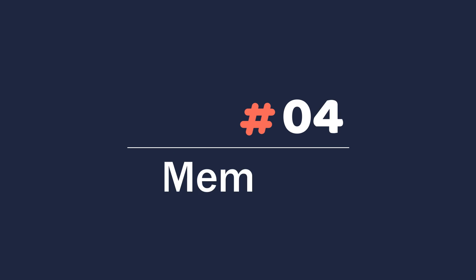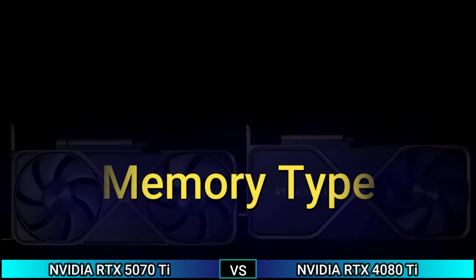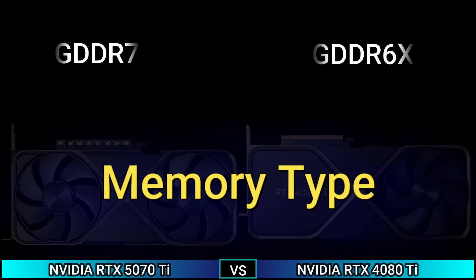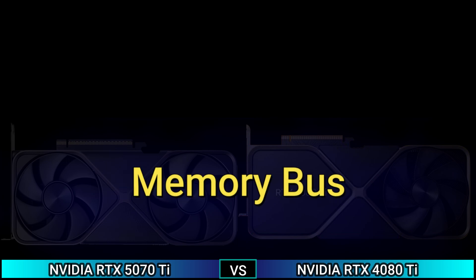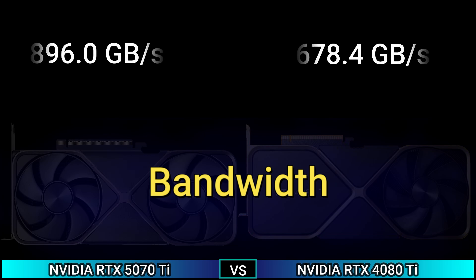Next, Memory. Memory size: 16GB. Memory type: GDDR7 and GDDR6X. Memory bus: 256-bit. Bandwidth: 896.0 GB/s and 678.4 GB/s.